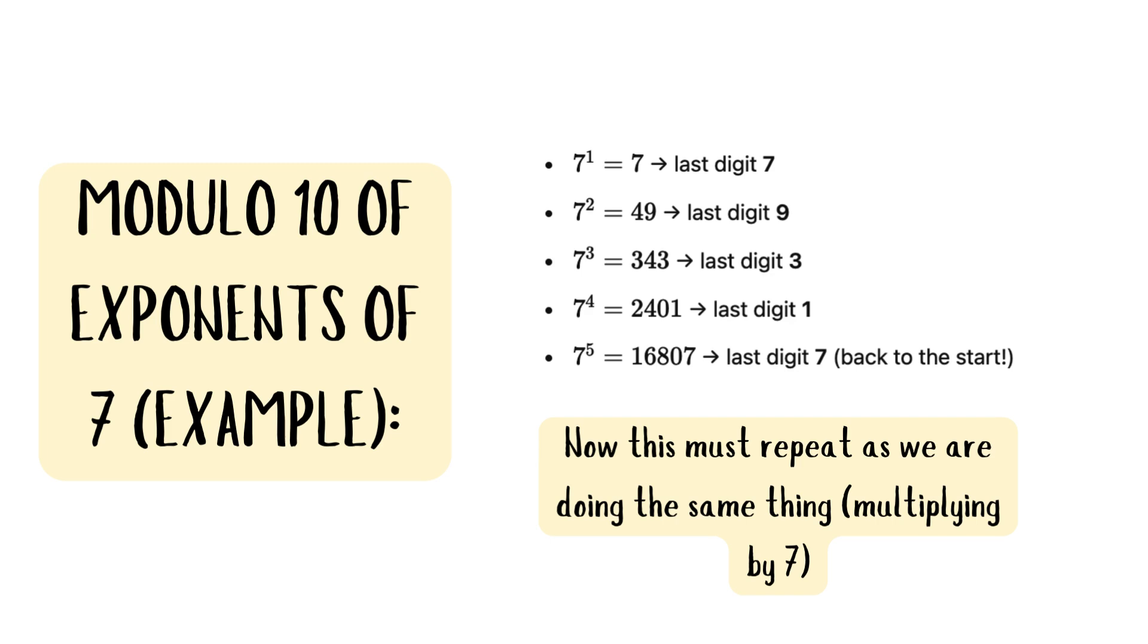Let's look at an example for the exponents of 7. So 7 raised to the power of 1 is 7, and the last digit is 7, meaning 7 modulo 10 is equal to 7, and so on. We can see when we come to 7 to the power of 5, we get the last digit 7, and we're back to the start.